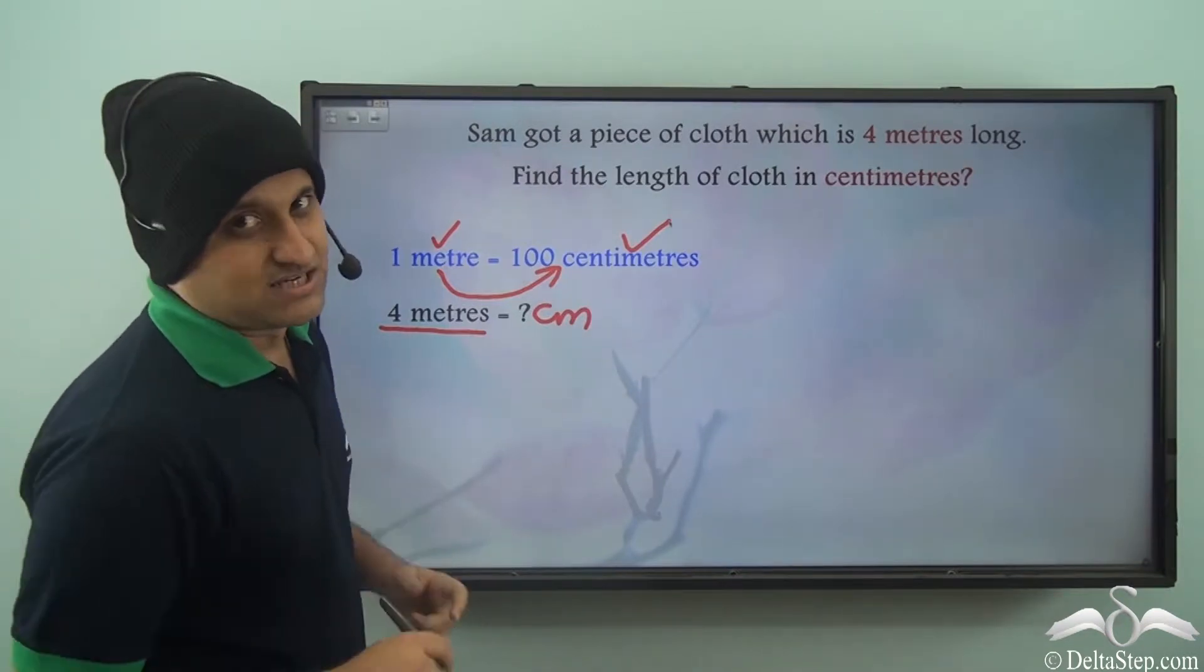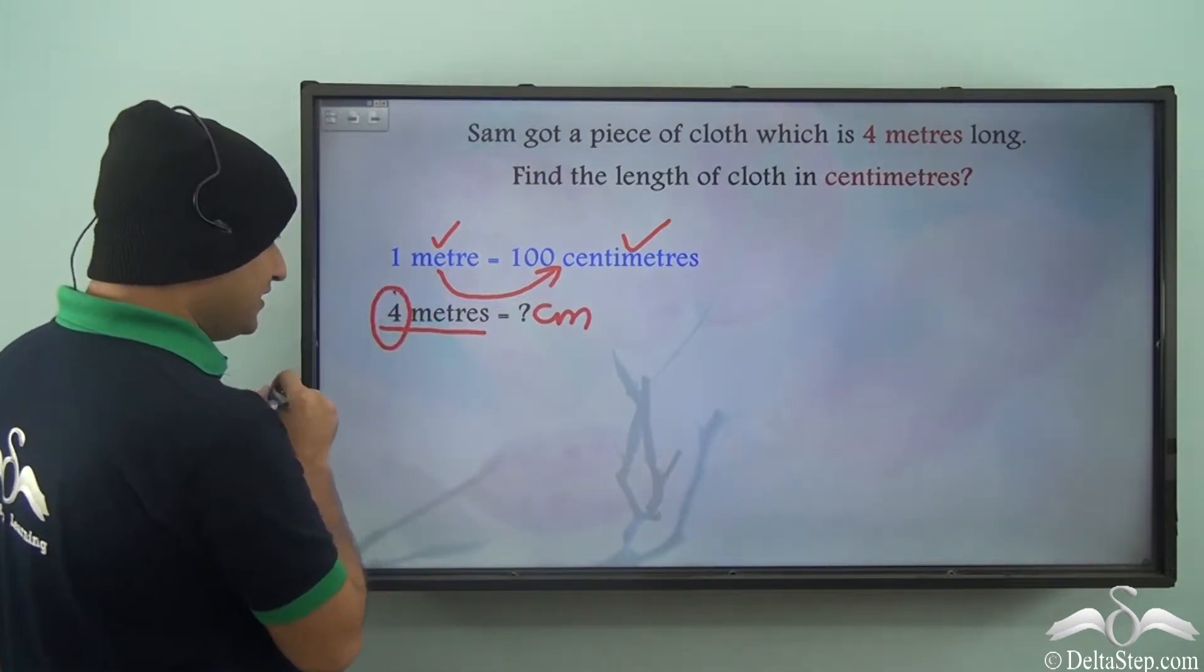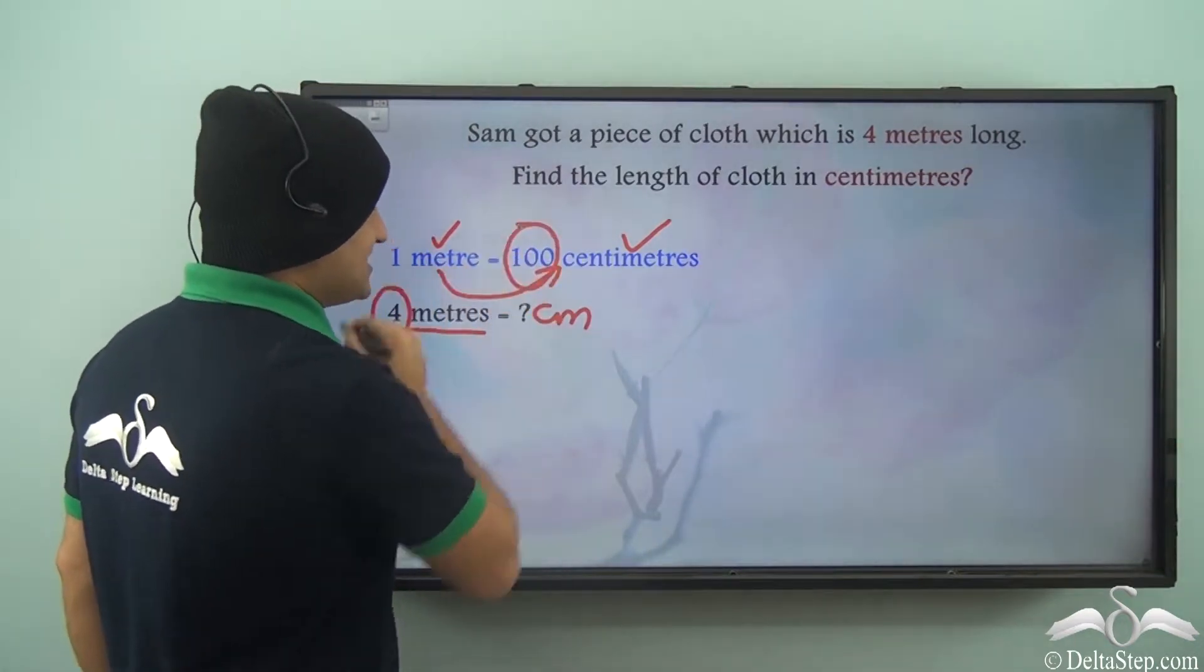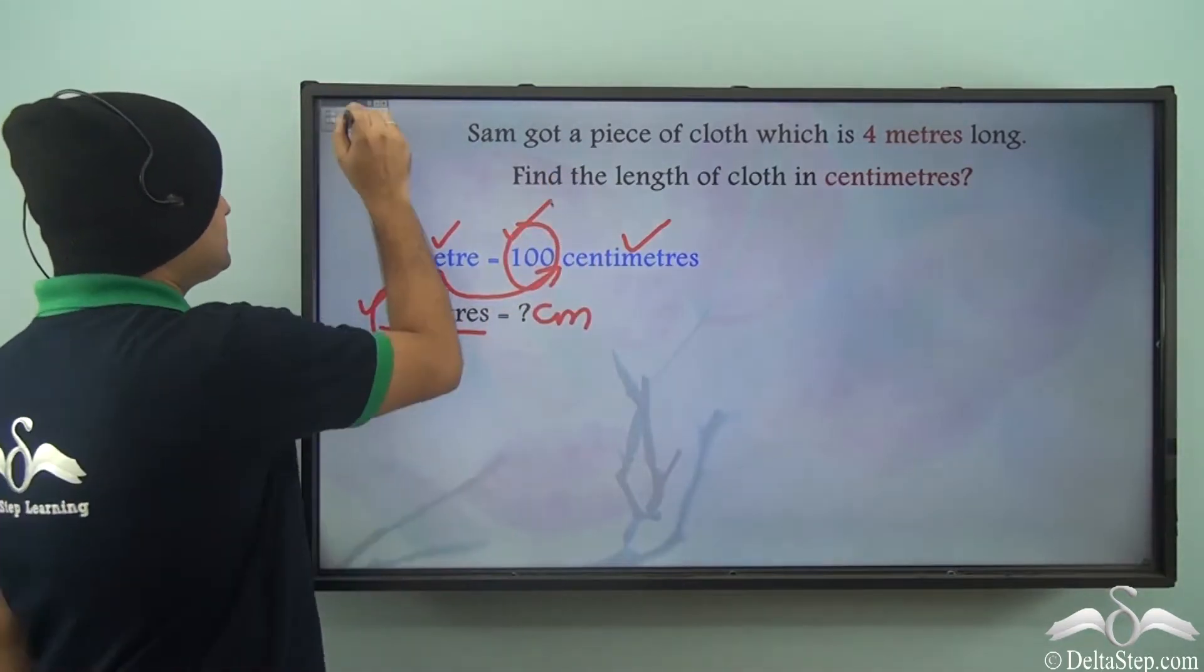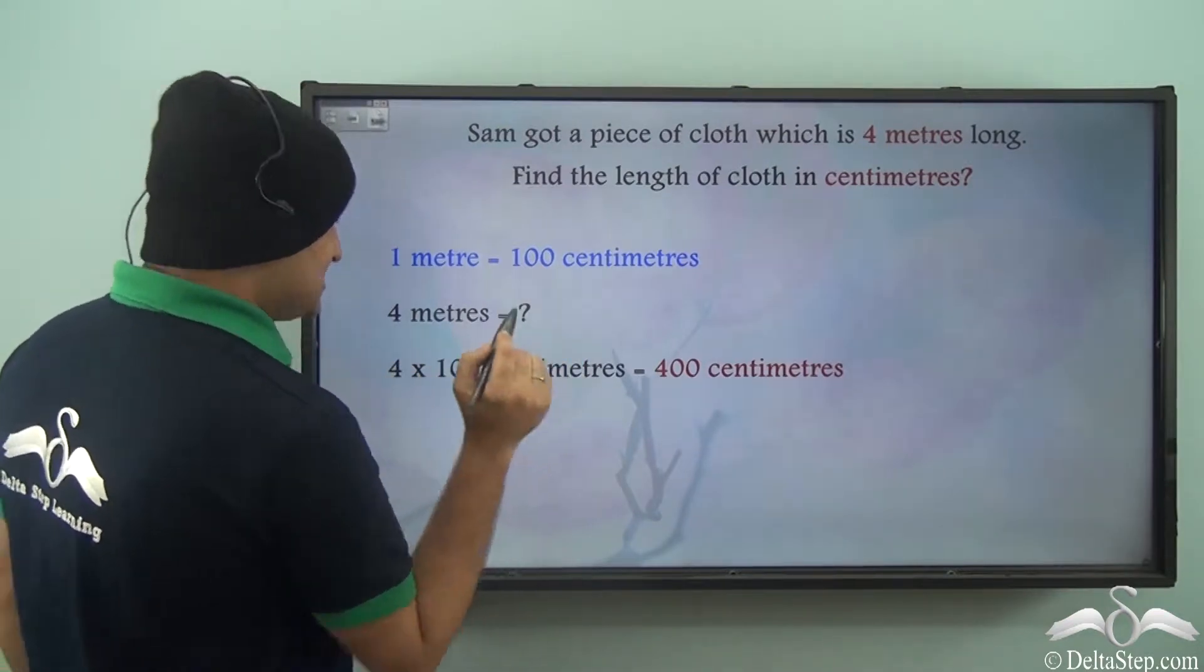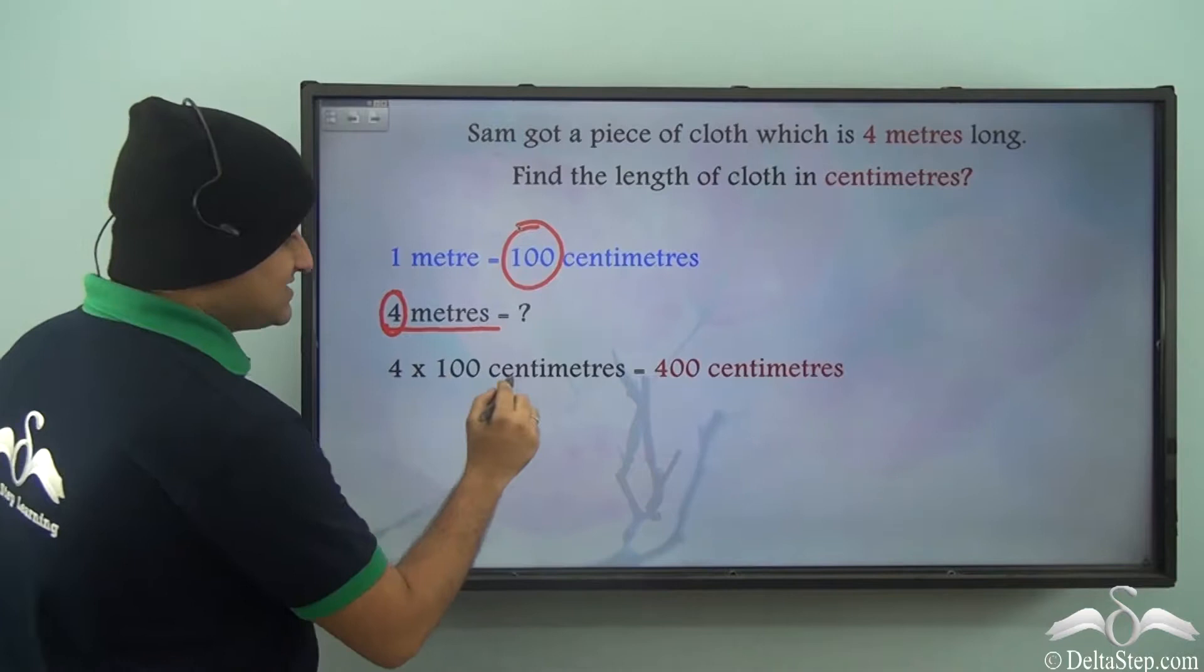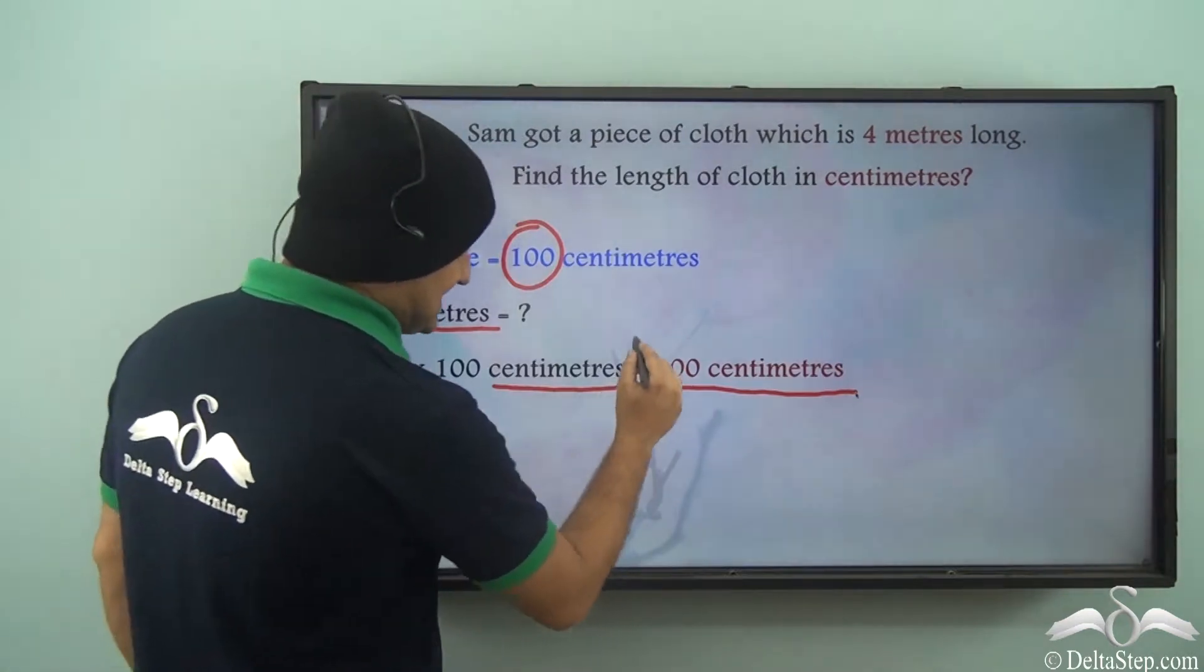We multiply this number with the conversion number. How many centimeters is a meter? It's 100 centimeters. So we multiply 4 with 100. So 4 into 100 centimeters, we can write 4 meters as 4 into 100 centimeters, which is 400 centimeters.